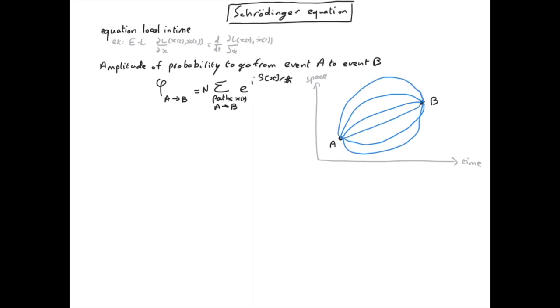But we want an equation which has only one time in it. So let's take for instance the final time for event B which we call t plus delta t for convenience.